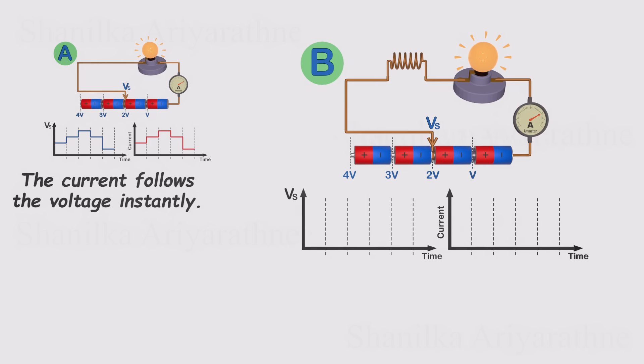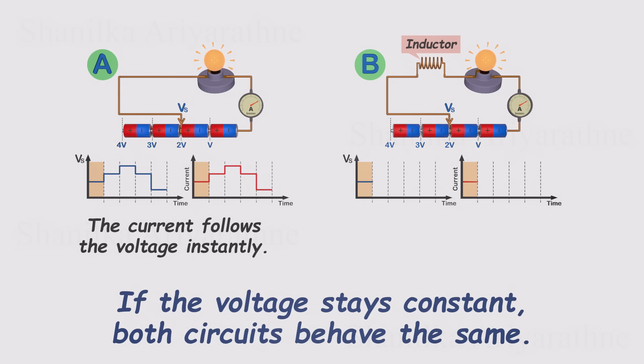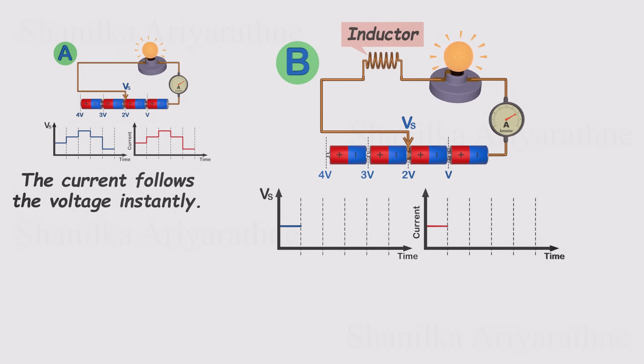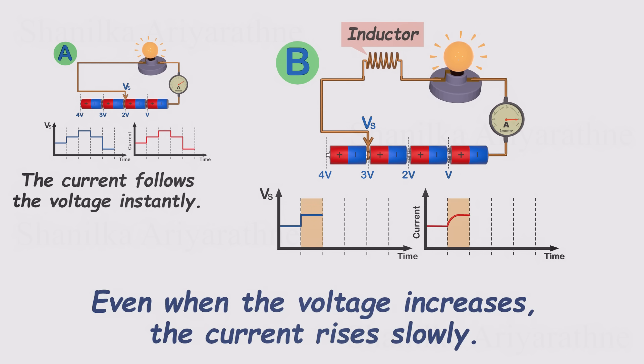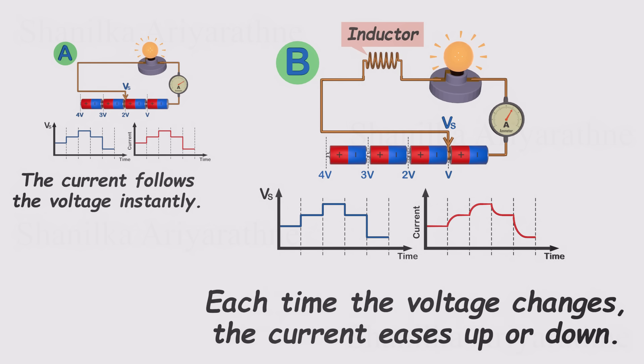But now, let's add an inductor in series with the bulb and see what happens. At first, with a steady voltage, nothing seems different. The current is the same, and it almost feels like the inductor isn't doing anything at all. But the moment we suddenly raise the voltage, everything changes. The current doesn't leap up right away. It climbs slowly as if the coil is dragging its feet. Eventually, it reaches the same level as before, but it takes a bit of time to get there. And if we keep changing the voltage in steps, the same thing happens again and again. The current never snaps instantly into place. It eases its way up or down, nice and gradual.